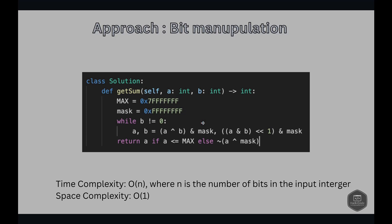Finally, we handle the return value for negative numbers. After the loop we return A; however, because Python integers are not limited to 32 bits, we need to interpret A as a 32-bit signed integer.